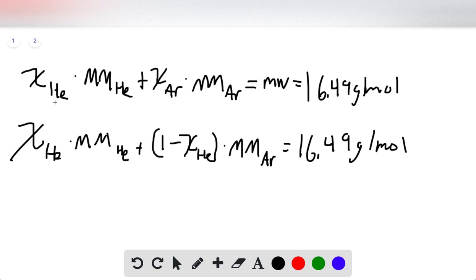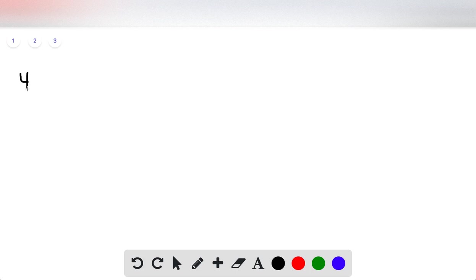Now that we have all of these, our only unknown is the mole fraction of helium, so we can plug in all our values. We have 4.0, which is the molar mass of helium, times the mole fraction of helium,